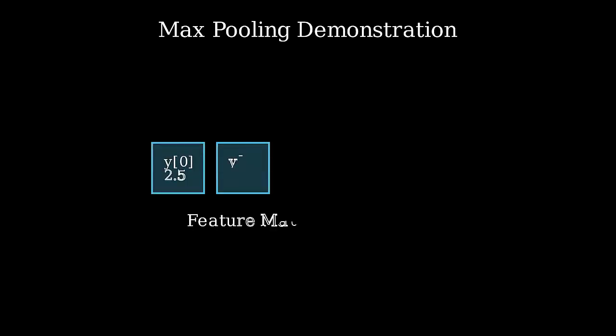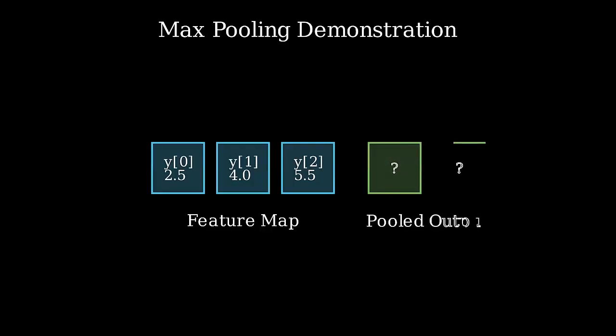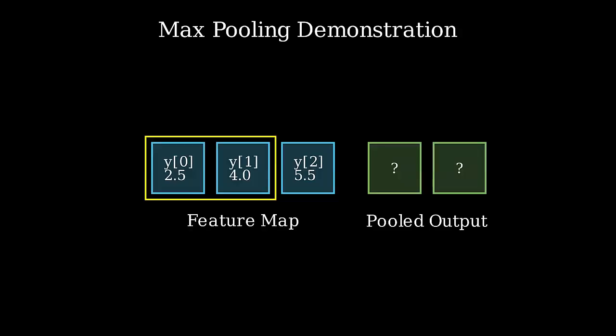The last step before classification is pooling, which helps condense the data. We'll look at max pooling. Starting with our feature map, which has values like 2.5, 4.0, and 5.5, our goal is to create a smaller pooled output. We use a pooling window, which in this case is size 2 with a stride of 1, meaning it slides one step at a time. The window first looks at the first two values, which are 2.5 and 4.0. In max pooling, we simply take the maximum value from that window, which is 4.0, and transfer it to the first cell of the pooled output.